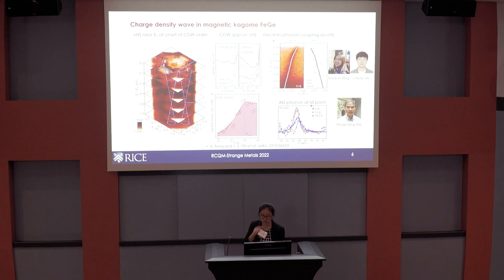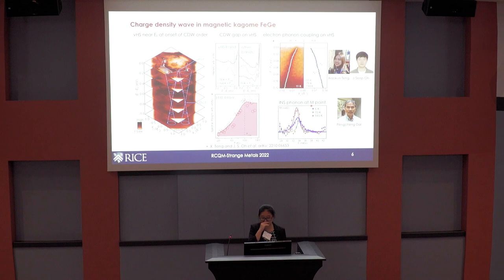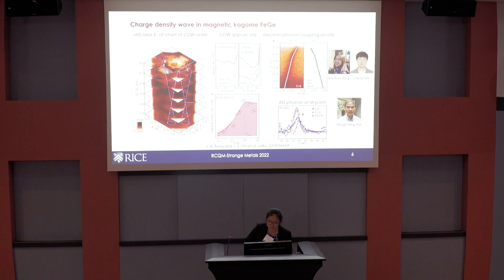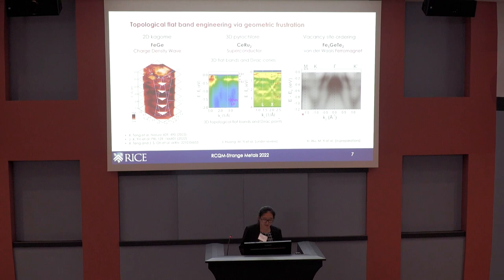To make a long story short, our current understanding of how CDW arises in iron germanium is that the mechanism of magnetic ordering brings the Van Hove singularity points from far away to close to the Fermi level. The proximity of the Van Hove singularity to the Fermi level is probably not sufficient alone to induce CDW, but likely selects the Q vector observed in the CDW ordering. Additionally, the electron-phonon coupling is also likely playing an important role — this kind of coupling is also observed in the non-magnetic 135 system where CDW is also found.